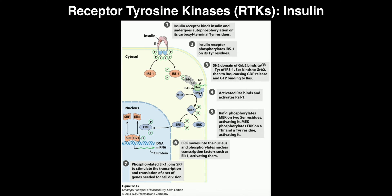RAF-1 is a protein kinase that phosphorylates and activates MEK. MEK is also a protein kinase, so when activated it phosphorylates and activates ERK. ERK is also a protein kinase; when phosphorylated, it goes into the nucleus and phosphorylates a transcription factor, activating it and leading to upregulation of genes involved in insulin's function. That's the basic idea of RTKs — the proteins in this pathway may vary slightly, but the general mechanism is the same.